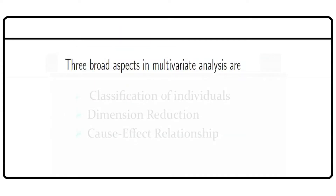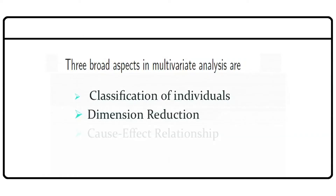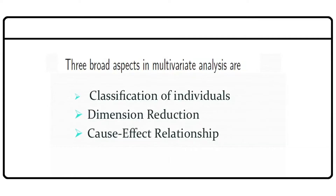The primary objectives of applied multivariate studies can be broadly classified into three groups: classification of individuals, dimension reduction, and cause-effect relationships. What is meant by classification of individuals? Very often, we have a group of individuals with several characteristics, and we want to find out how closely the individuals resemble one another — that is, we want to find out the distance between these individuals regarding their similarity. Classification is easy when we look at a univariate case, but it becomes more complex the more the number of variables involved.